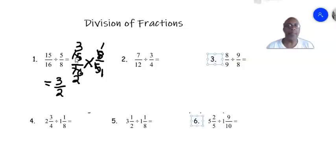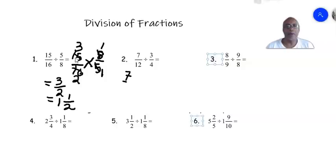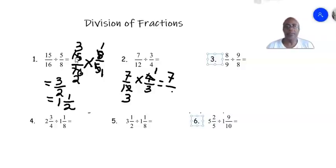The 5 and 15 can also be cancelled out: 5 into 5 is 1 and 5 into 15 is 3, so we are left with 3 over 2. That is an improper fraction, so we convert to a mixed number: 2 into 3 is 1 remainder 1, giving 1 and a half. For number two, 7 over 12 divided by 3 over 4 becomes 7 over 12 multiplied by 4 over 3. The 4 can go into 12, giving 7 over 9.